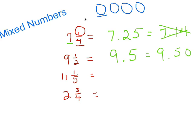Now let's do eleven and one-fifth. Our whole number is eleven — put that down with a decimal. For one-fifth, remember: if I multiply the numerator and denominator by the same number, I get an equivalent fraction. I'll multiply by two to get a fraction over ten, since tenths are easy to write as decimals. One times two is two, five times two is ten — so one-fifth equals two-tenths. That gives us eleven point two, or eleven and two-tenths.